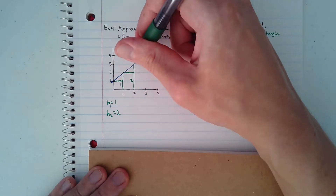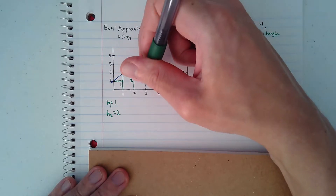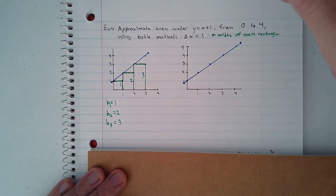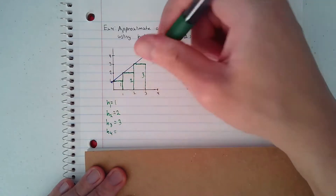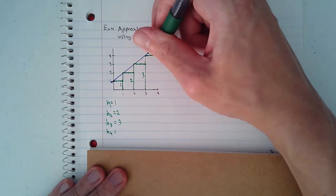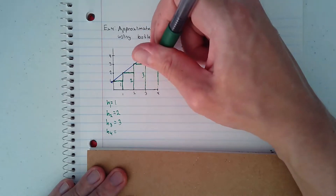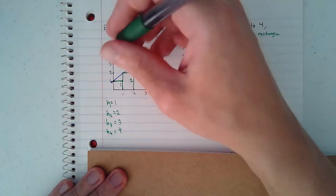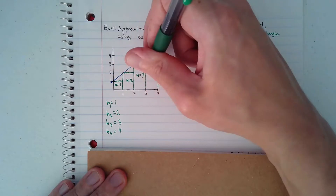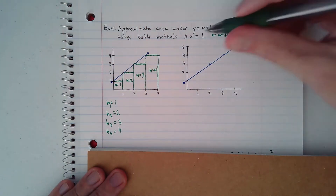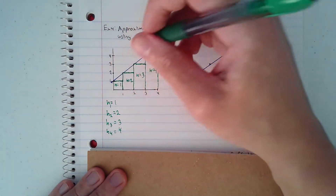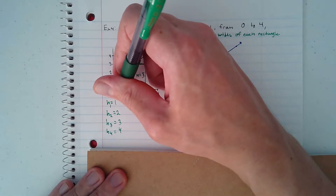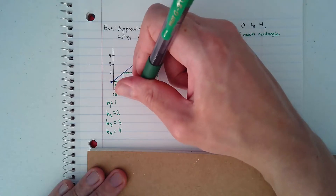Now the third rectangle: h3 equals 3, it has a height of 3. And the fourth rectangle has a height of 4. So the heights are 1, 2, 3, and 4. The width, delta x, is equal to 1 on each rectangle.